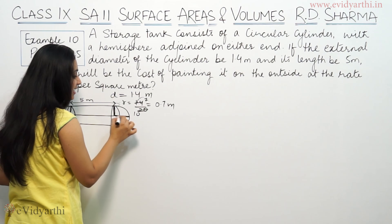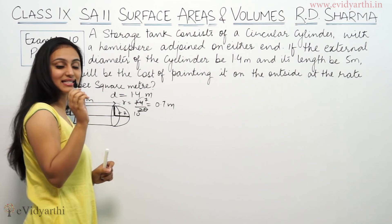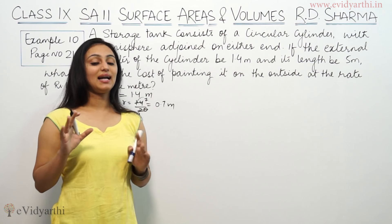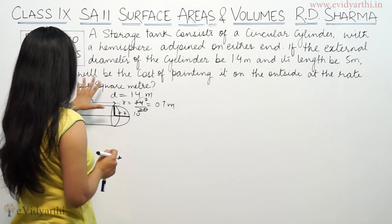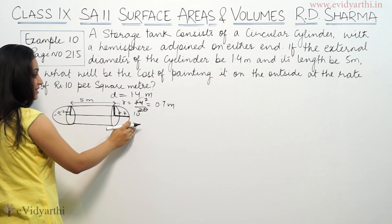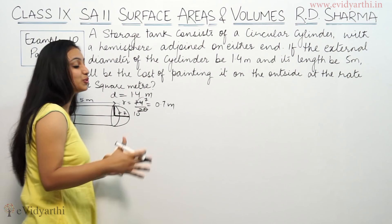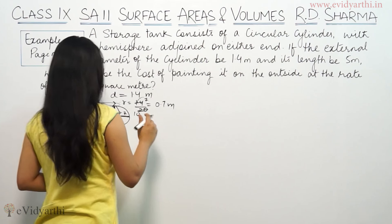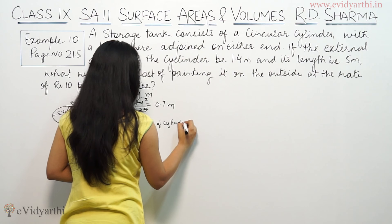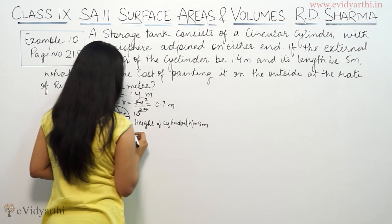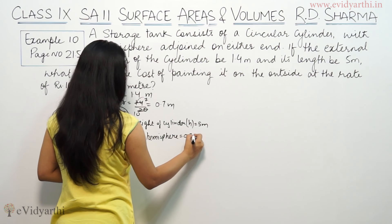The radius of each hemisphere equals 0.7 meters — this is 0.7 meters, and this is also 0.7 meters on both sides. So if we paint the outside, the total area is the curved surface area of the cylinder plus the surface areas of the two hemispheres. The height of the cylinder is 5 minus 0.7 minus 0.7, and the radius of the hemisphere is 0.7 meters.